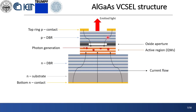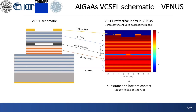Basically, a bias is applied to the contacts; from them, carriers are injected and reach the active region passing through semiconductor DBRs and an oxide aperture. Here, carriers recombine providing photon generation, allowing for vertical emission of coherent light. This is a cross-section of the refractive index profile of the VCSEL investigated in Venus. It is clear that all the main features are included in the solver. Notice that this is a compact version of the actual device — only a few of the DBR pairs in the proximity of the active region are reported in the figure to better highlight all the relevant details of the structure.